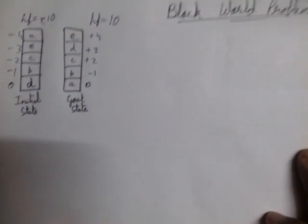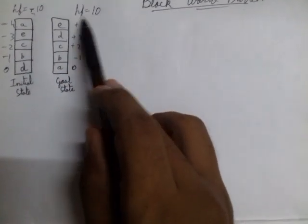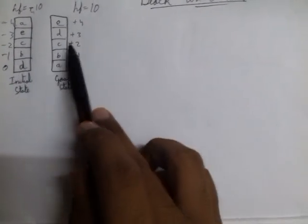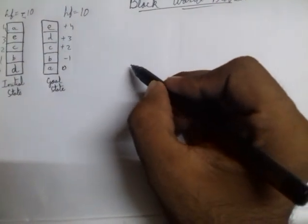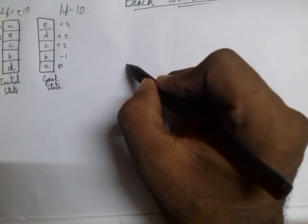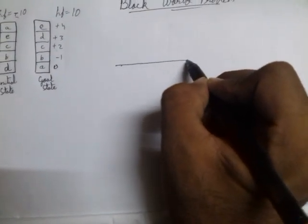What you have to do is move from -10 to +10 and try to achieve the goal state. The first step involves working with the first block available in your initial state.